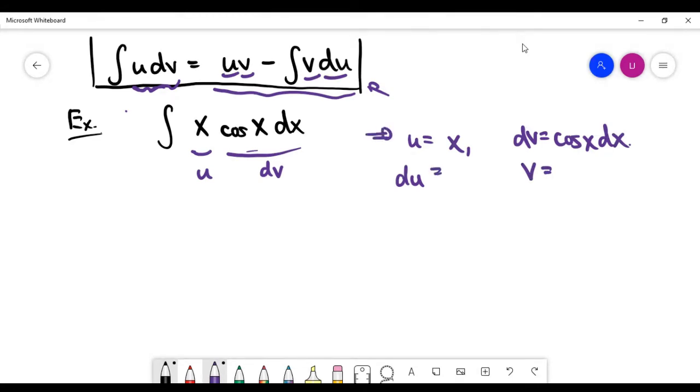And du is actually differentiation of x. So it becomes one, or after differentiation with respect to variable x, one times dx. And from dv to v, it's actually integration. So because you are trying to reverse the process from dv, which is differential of v, back to the original function v, it means we have to integrate cosine x, which is sine x.